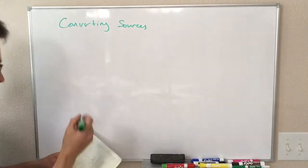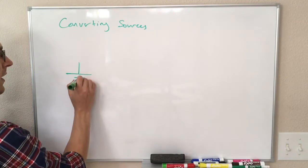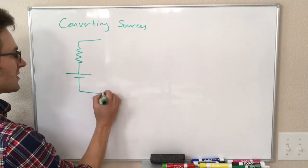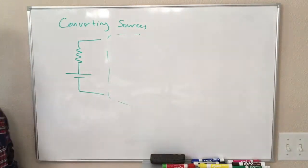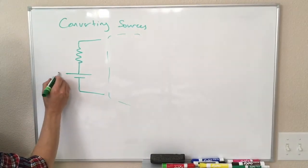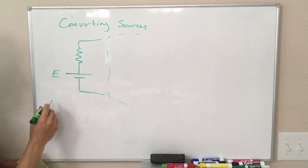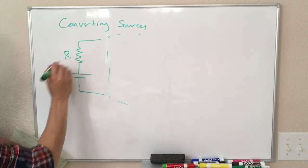So that looks something like this. So we have a voltage source that is connected in series with a resistor, and it's connected to some other part of the circuit over there. So if this voltage source has a value of E volts, and the resistor has a resistance of R.